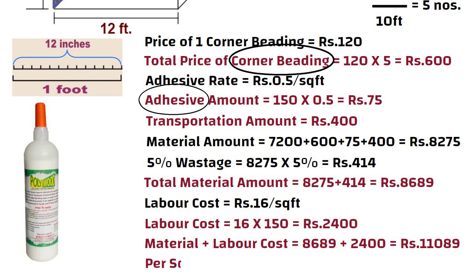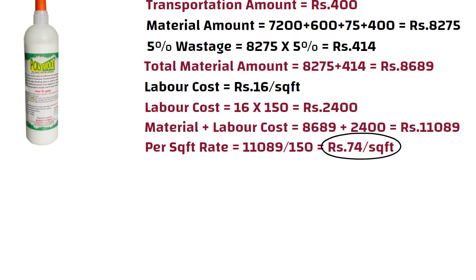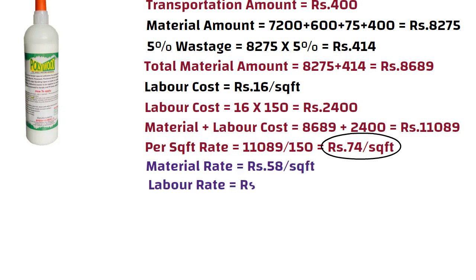The rate per square feet comes to 11,089 divided by 150, that is approximately 74 rupees. Now you know the rate per square feet for PVC panels, so you can directly calculate the whole area of your house and multiply it by 74 rupees to get the total amount. To summarize: the material rate comes to 58 rupees per square feet, the labor rate comes to 16 rupees per square feet, and the total rate is 74 rupees per square feet.